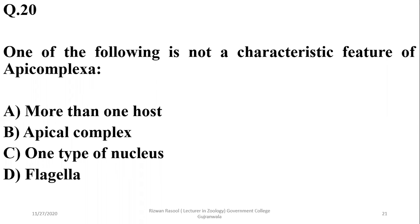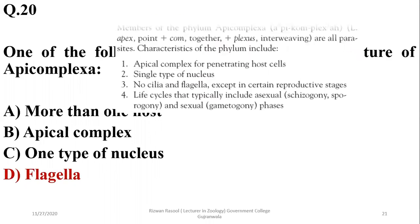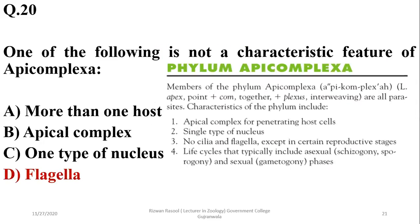Question twenty: which of the following is not a feature of Apicomplexa? Apicomplexa — the group including Plasmodium — have more than one host, possess an apical complex, and have one type of nucleus. However, they are non-motile and do not possess any flagella. So the correct option is D.